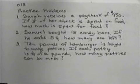And do some practice problems to see if you can read the problem and decide what operation to use. The first one, Sarah receives a paycheck of $950. We'll assume this is her monthly paycheck. If one-fifth of her check is spent on food, how much is spent for food? The second problem, Samuel bought 15 candy bars. If he eats five and one-fourth candy bars, how many are left?